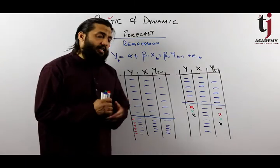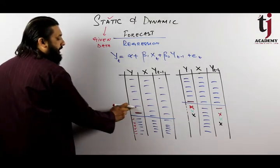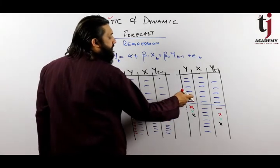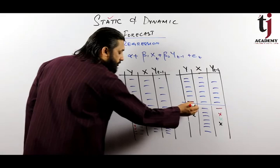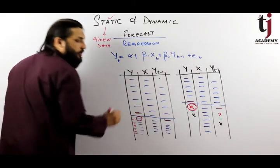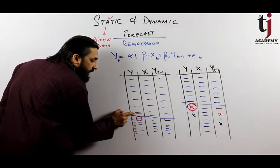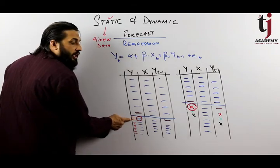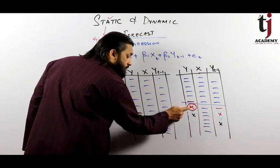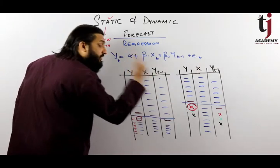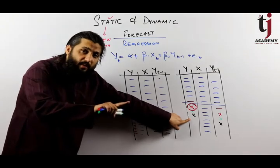An important small point: the first forecasted value in static and dynamic forecast will be the same. For example, the last y value and its lag for the next period — whether you use static or dynamic forecasting, the first forecasted value will be identical because y(t-1) is the same in both cases at that point.